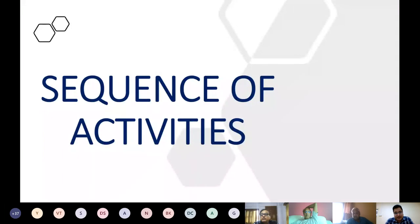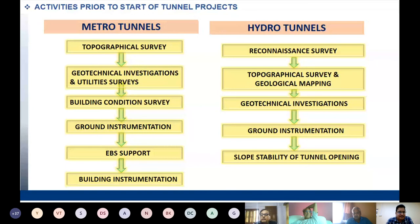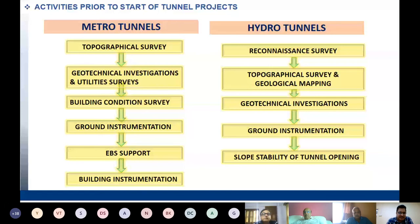In metro tunnels, the alignment is fixed not based on geology but based on traffic need. The alignment and metro stations are pre-fixed by urban and transport authorities. What we do there is a geo-topographical survey, alignment survey, habitation survey, and then geotechnical investigation. We are missing a big part here — geological mapping. Though we often do geological mapping, it cannot be compared to the scale and accuracy we have with hydro tunnels. A new entry here is utility survey, which is not required for a hydro tunnel project.